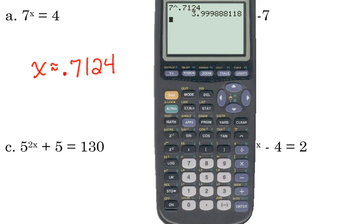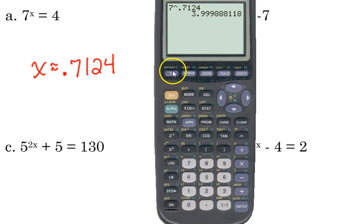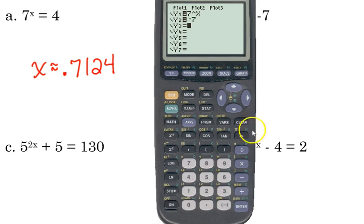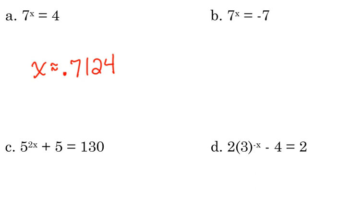All right, y'all let me know when we're graphing these things if you have any issues with your calculator. Now, what if we didn't think about the fact 7 to the x is equal to negative 7? If we don't think about the fact that we can't raise 7 to an exponent and get negative 7. So if we were using that same approach that we just used, all we did was change the right side of that equation, so we need to change our y2 and graph it. Here's our graph of 7 to the x. Here's negative 7. Do those come anywhere close to intersecting? No, they don't. If they don't intersect, they don't have a solution.